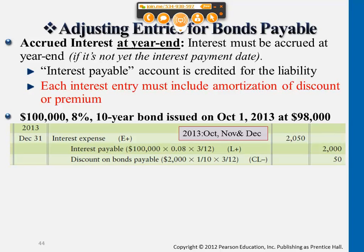This is an example where the issuance doesn't happen on January 1st — it's on whatever date that is in the middle of the year. When it reaches the end of the year, we don't have to pay money to bondholders yet because it hasn't reached half a year. But we still have to record an adjusting entry to recognize the interest at year end.